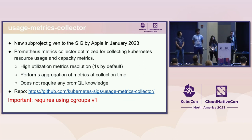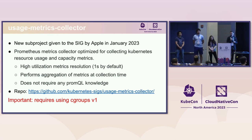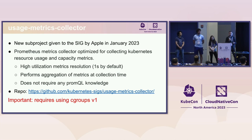The next project is pretty new and exciting — it was given to us earlier this year. It covers a gap we noticed: when scraping resource usage metrics, it doesn't scale well. There were performance limits preventing us from reducing the resolution to, say, one second to get even more data, for example for capacity planning.